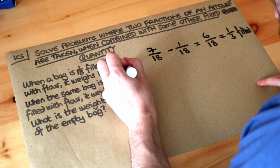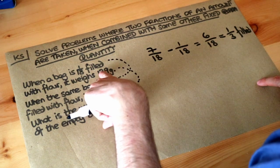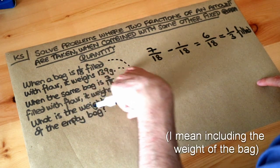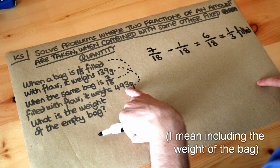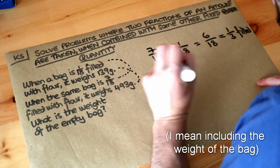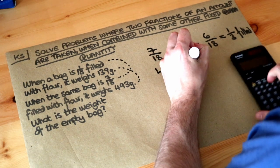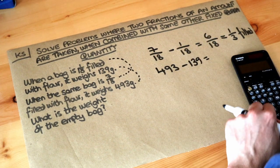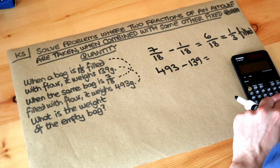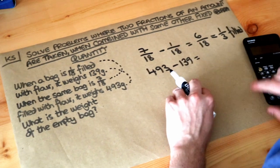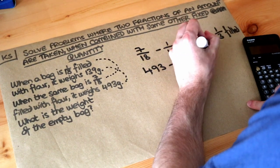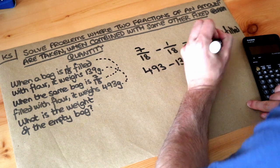Now we can also find the difference between these two amounts because we're filling it from 139 grams of flour up to 493 grams of flour. So we subtract those, so 493 minus 139. I'll do it in my calculator.